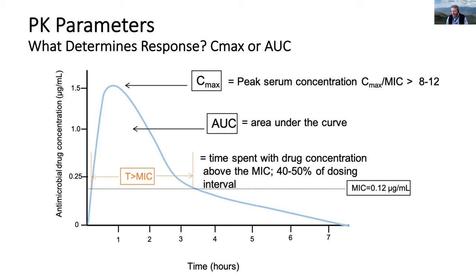We do know that C-max matters for toxicity for some agents, that area under the curve or total exposure matters for response for some agents in terms of neutropenia and anti-tumor response, and that sometimes you want to keep the drug over a specific threshold value to inhibit target as much as you can. Clearly with antimicrobial dosing this is easier because endpoints like bacterial growth inhibition are simpler to measure. In cancer this becomes much more difficult because drug therapy may be in the adjuvant setting, and it's important to figure out what we need to optimize pharmacologically — do I need to give this drug at higher doses less frequently or lower doses more frequently?